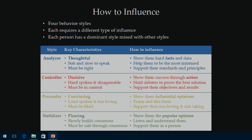A lot of us think persuasion is one-dimensional — it's really four dimensions. Some personality style tests label people as analyzers, controllers, persuaders, and stabilizers. Analyzers are thoughtful, slow, soft-spoken, and must be right all the time. Controllers are decisive, hard-spoken, disagreeable — they must be in control. Persuaders are convincing, loud, fun-loving — they must be liked. Stabilizers are pleasing, slowly build consensus, and must be safe through having consensus. You persuade people differently depending on what style they have.